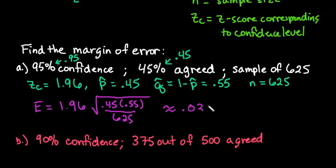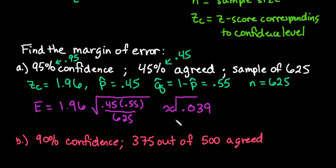If you were actually creating a confidence interval with this, you would take your p-hat and subtract the margin of error to get the lower limit, then take p-hat and add it to get the upper limit. But for this problem all we were finding is the margin of error, so the margin of error is plus or minus 0.039.